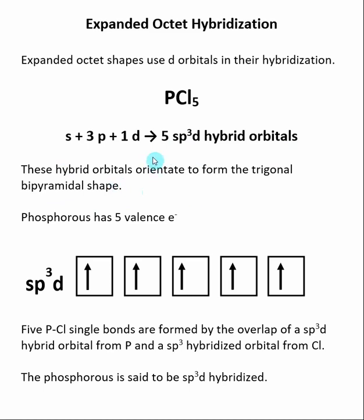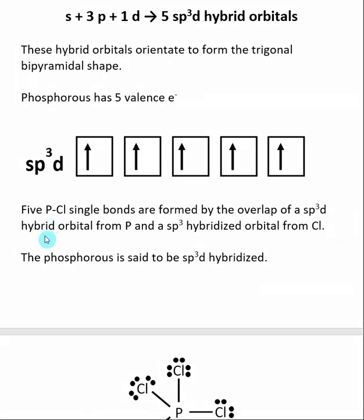So now we have 5 equivalent sp3d hybrid orbitals. Phosphorus has 5 valence electrons. When we put the electrons into the electron configuration for our 5 equivalent sp3d hybrid orbitals, we see that we have 5 unpaired electrons. These will then go on to form 5 equivalent PCl single bonds by overlapping with sp3 hybrid orbitals from chlorine.